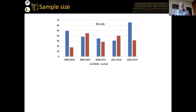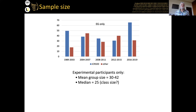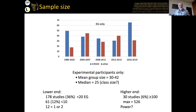Are sample sizes actually increasing over time? Not really. The JCR-100 shows a U-shape, higher in the last period partly because people are using more than one experimental group. There's no real indication that sample sizes are growing. The mean group size was 30 to 42 in each period, and the median was 25 — again suggesting we're just researching with our own students at class size. For quantitative statistical analysis, insufficient sample size means you lose power, which is potentially a major problem.